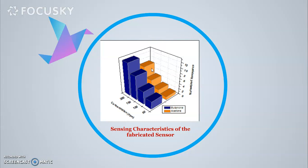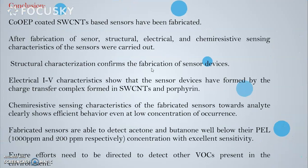In case of butanone, the donation is more promising because it has highly donating species. This is related to detection of the ketones by the fabricated sensor.